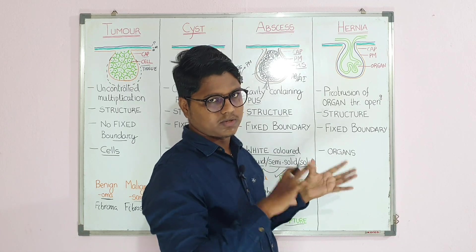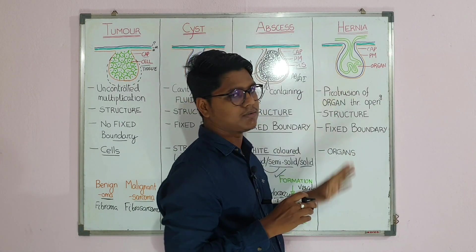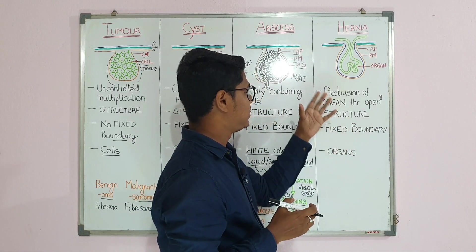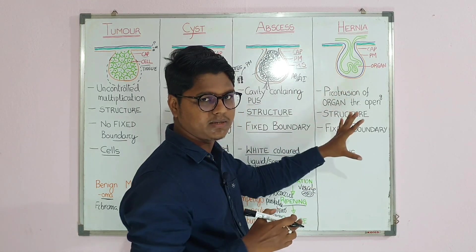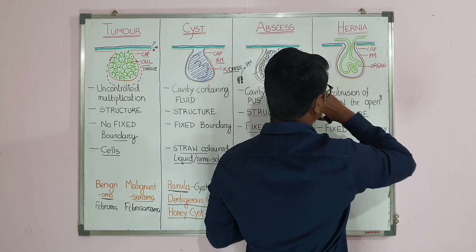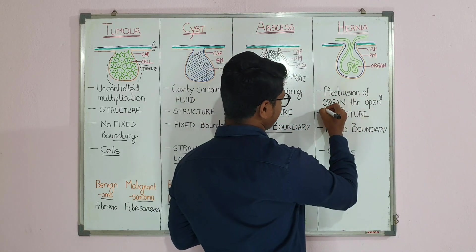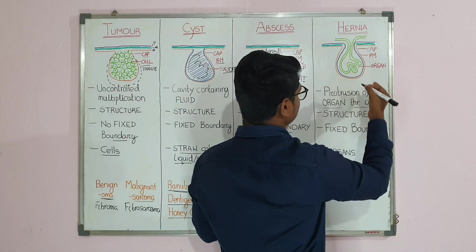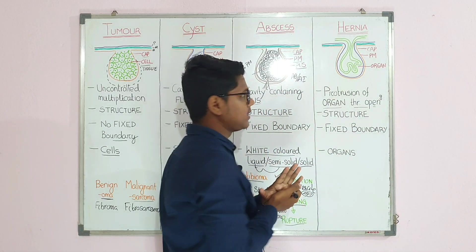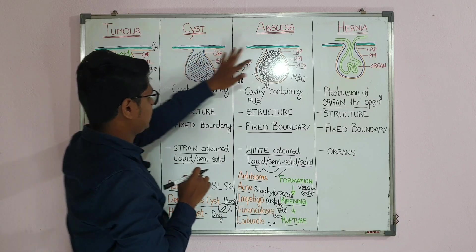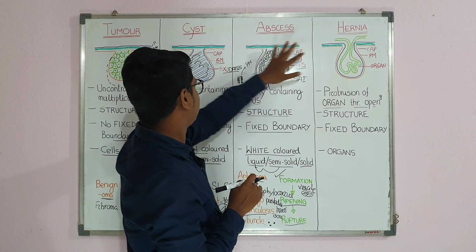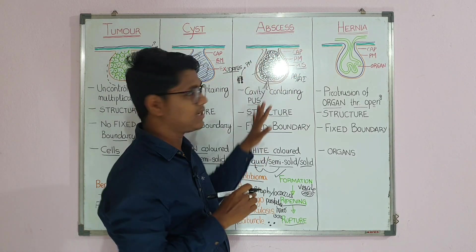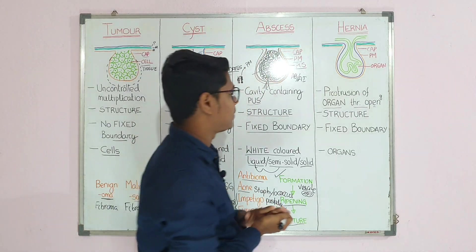Now coming to hernia — hernia is a separate chapter and I will discuss it in detail in systemic surgery. For now we will discuss only the important aspects from a differentiating point of view. Hernia is basically the protrusion of an organ through an opening — it may be a natural opening or a traumatic opening. The structure is very important.